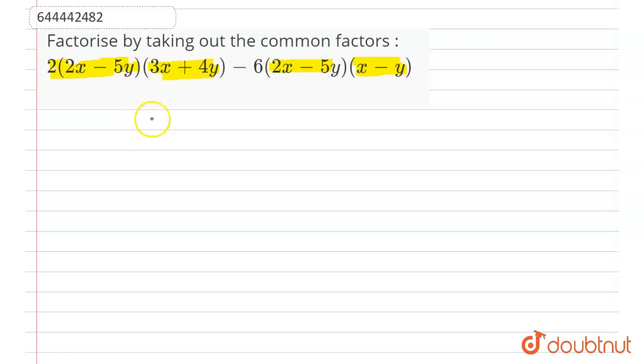Let's solve this. The equation is 2(2x - 5y)(3x + 4y) - 6(2x - 5y)(x - y).